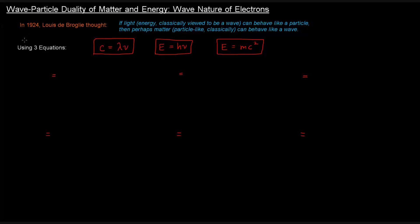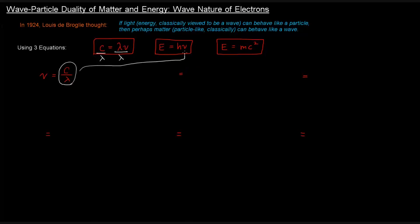What we're going to do is use these three equations to find a new equation. First, we're going to take C equals lambda nu and divide both sides by wavelength, and we will get nu equals C over lambda — we just solved for nu. Then we're going to take that expression for nu and plug it into E equals h nu.